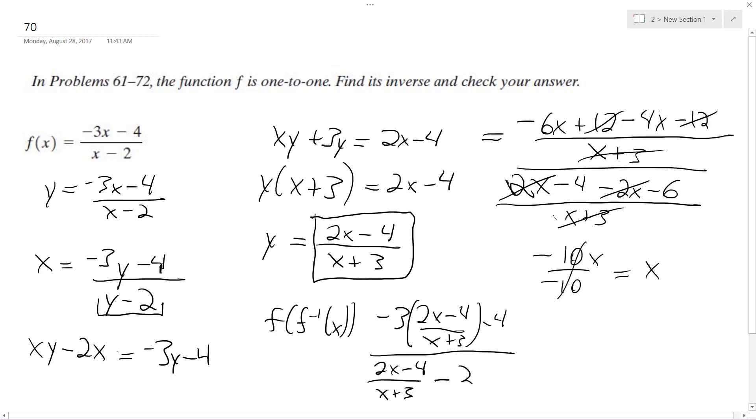This equals x, and because it equals x, that means the inverse is valid. So our inverse is 2x minus 4 over x plus 3.